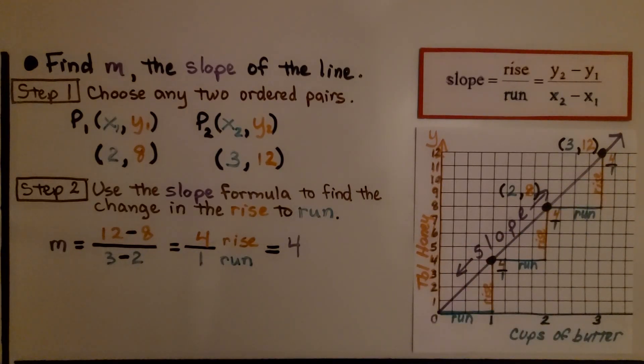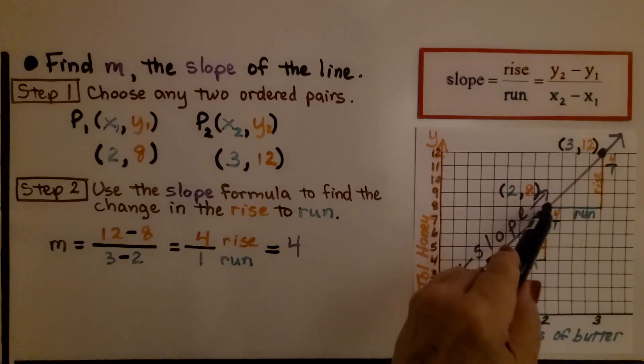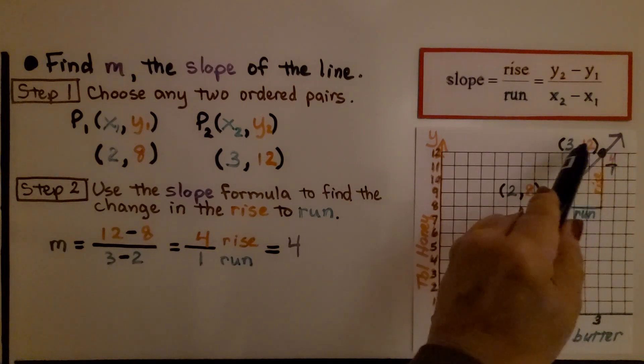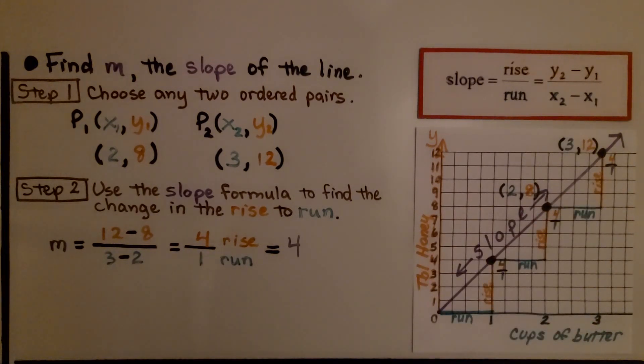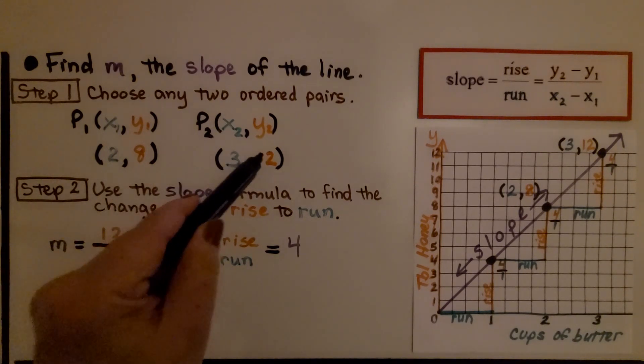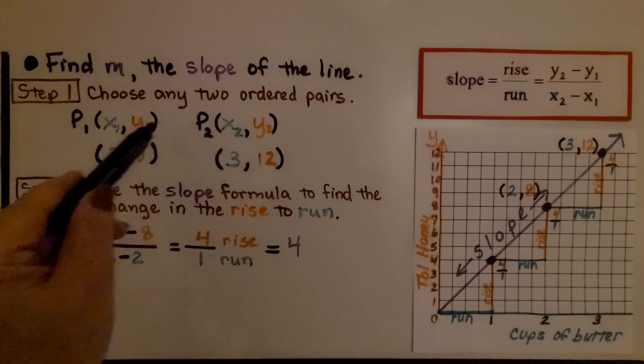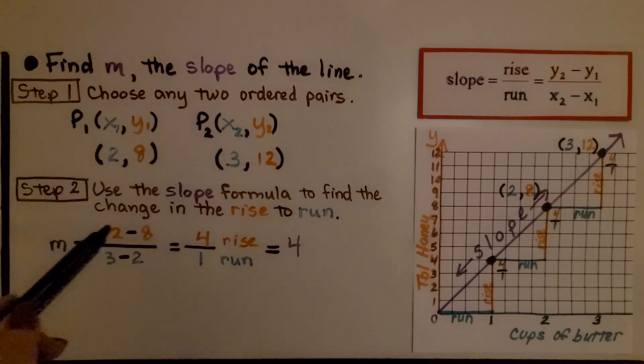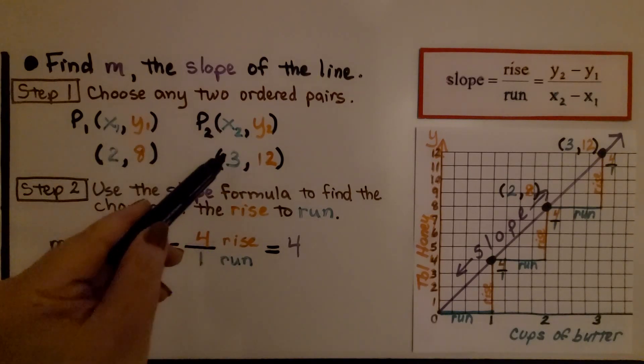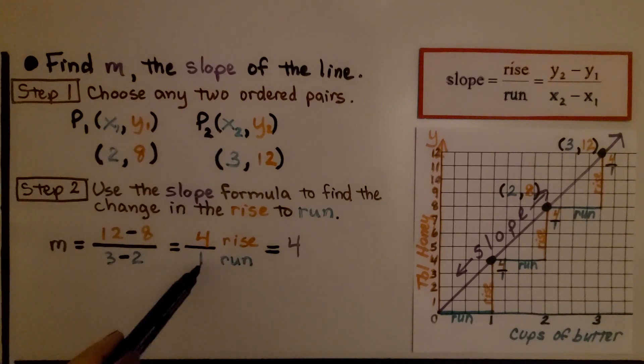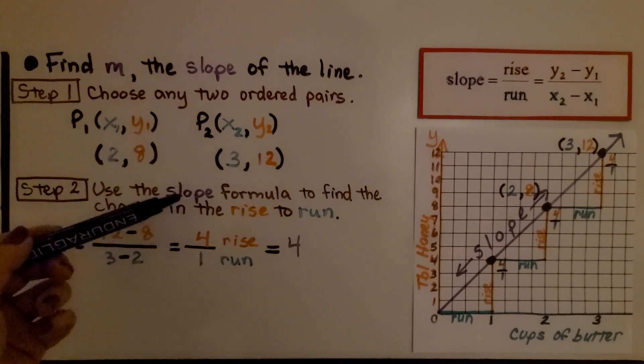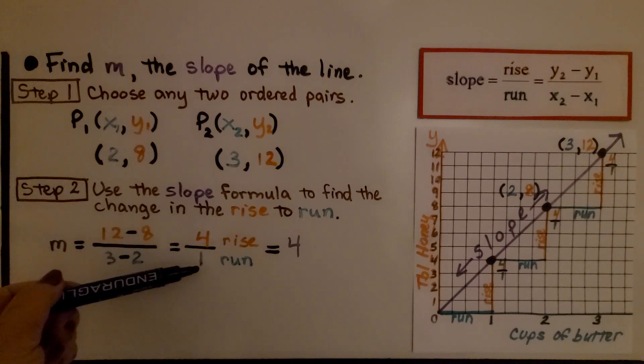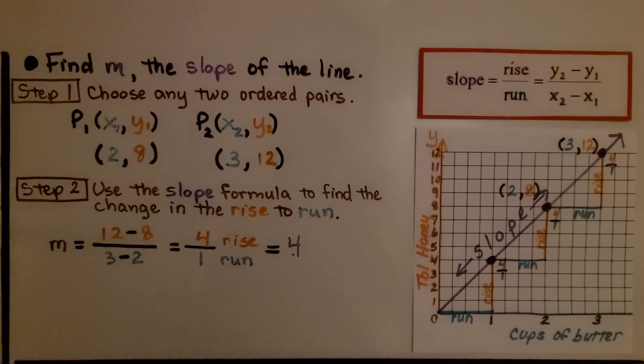Here we choose any two ordered pairs. I chose 2 for x, 8 for y, and 3 for x, 12 for y. We use the slope formula, and we do the second y value, 12 minus the first y value, 8, we get a 4. We do the second x value minus the first x value, we get a 1. We have our rise over our run as 4 over 1. When we simplify it, we get a 4. We know the slope is 4 for this line.